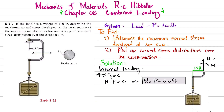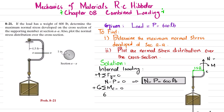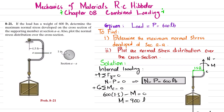Now we will find the moment M. The sum of all moments about point C must be equal to zero, taking counterclockwise moment as positive. About point C, one moment is due to the 600-pound load at a perpendicular distance of 1.5 feet, which produces a counterclockwise moment: positive 600 multiplied by 1.5 feet. The reaction moment M is clockwise, so it is minus M. Their sum equals zero, giving M equal to 900 pound-feet.